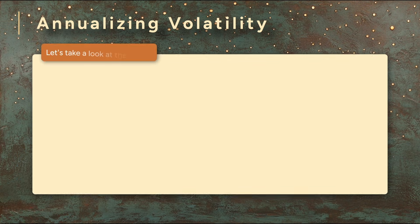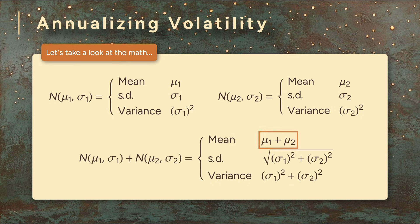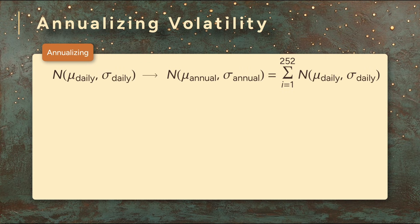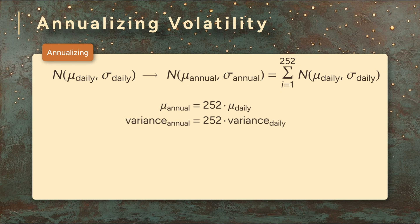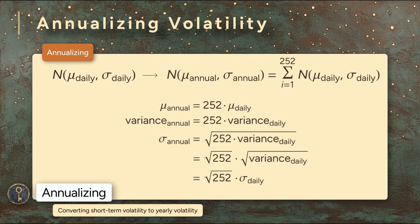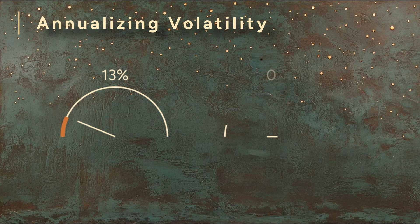Here's how the math works. When you combine two normal distributions, their means add together, and their variances add together. The standard deviations, however, do not simply add up. Recall the standard deviation is the square root of the variance, so the standard deviation of the combined distribution is the square root of the sum of the variances. The annual return is 252 times the daily return. The annual variance is 252 times the daily variance. If we take the square root of both sides, we get that the annual standard deviation is the square root of 252 times the daily standard deviation. This process is what we call annualizing. The annual volatility ranges from about 13% to 20% — much more relatable values.